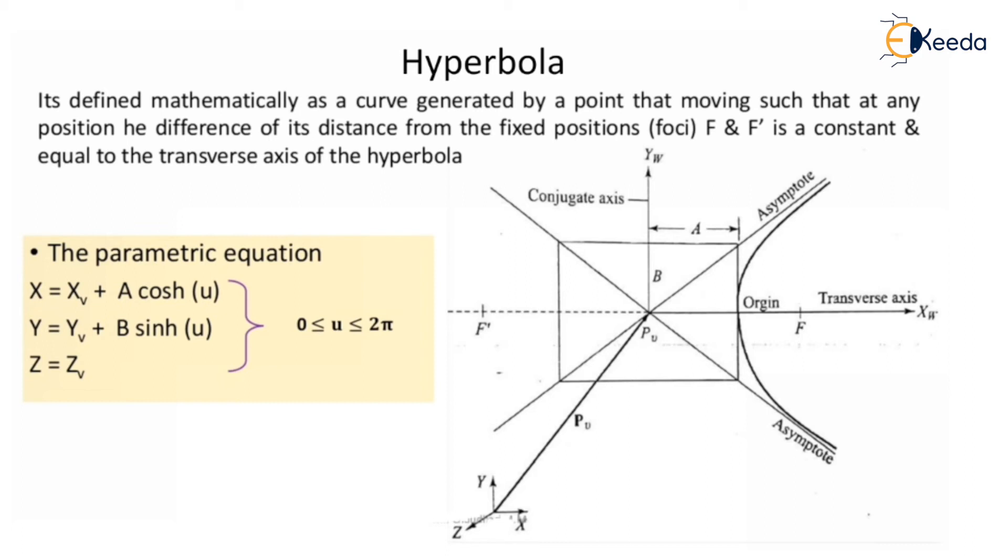Asymptotes are there, and from the origin there is distance a. How we calculate a is from the original point Pv. There are two foci on the x-axis: one on the positive x-axis and one on the negative x-axis.